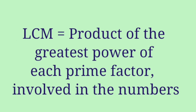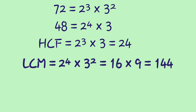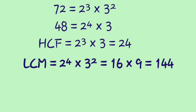Next, for the same numbers, how to find the LCM. LCM is equal to the product of the greatest power of each prime factor involved in the numbers. Therefore LCM = 2⁴ × 3² = 16 × 9 = 144.